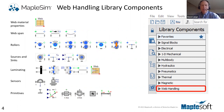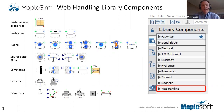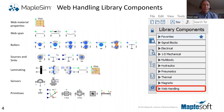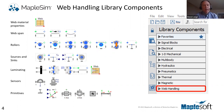Until recently, there was no specific web handling library, but MapleSim has created one. This library involves several items common to web handling systems. For example, you can define the mechanical properties of a web — things like modulus, thickness, etc. You can define web spans, which are the regions between rollers, and there's a variety of rollers including idler rollers, driven rollers, SRAP rollers, or NIP rollers. You can feed the system with sources and take web away with sinks, represented as unwinding or winding rolls.